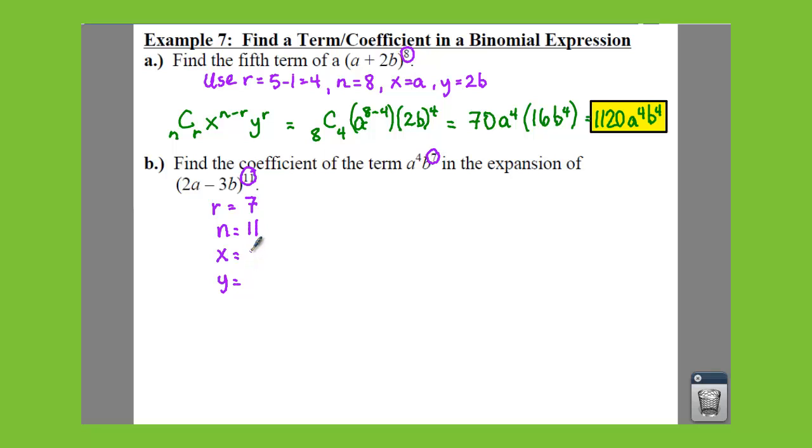And we know that we're going to have 2a as our x and negative 3b as your y. So that helps us because now we can plug all of these values into this formula right here and we can find out what our coefficient is.